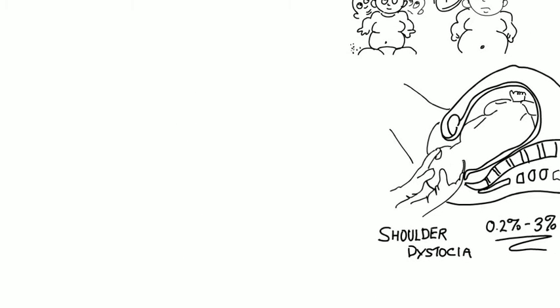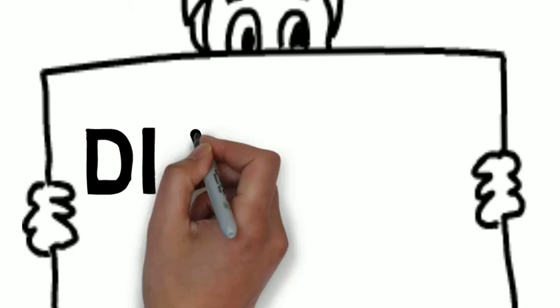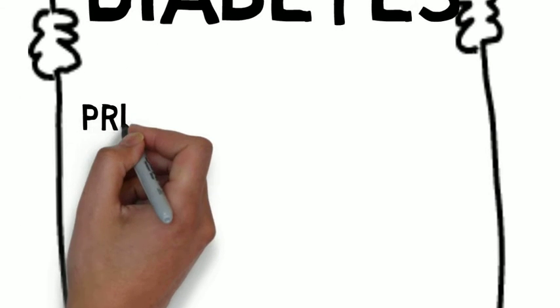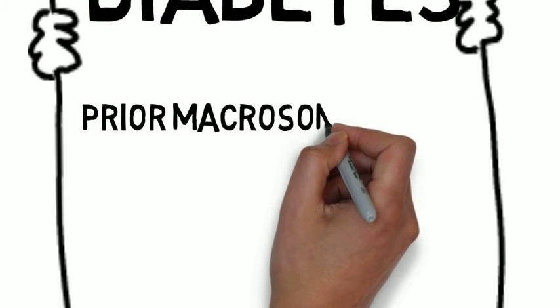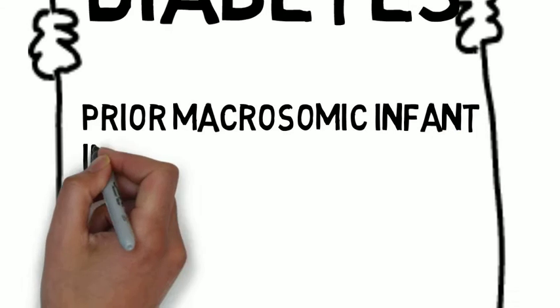When it comes to predicting macrosomia, knowing the risk factors is helpful. Diabetes is the biggest, but what are the other risk factors? The top three besides diabetes in order are: 1. Prior macrosomic infant, 2. Increased maternal pre-pregnancy weight, and 3. Increased maternal weight gain.